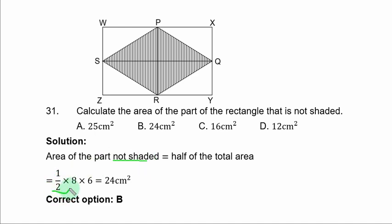That is 1 over 2 times length. The length is 8 and the breadth is 6. If you multiply and divide by 2, you have 24 square centimeters. B is the correct option.